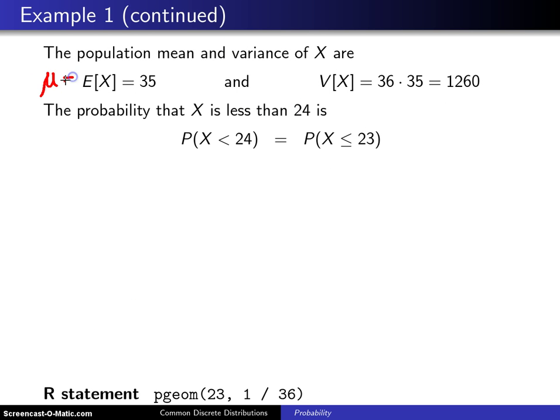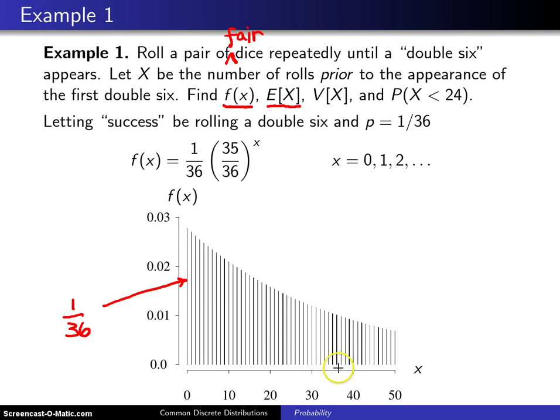So μ, or the expected value of X, is 35, and you get that by simply plugging into the formula E[X] = (1 - p) / p, and that will give you a balance point on this distribution of 35.